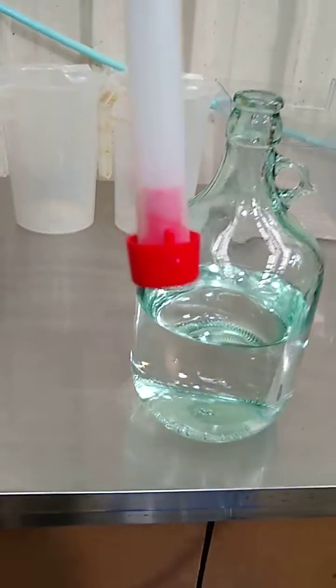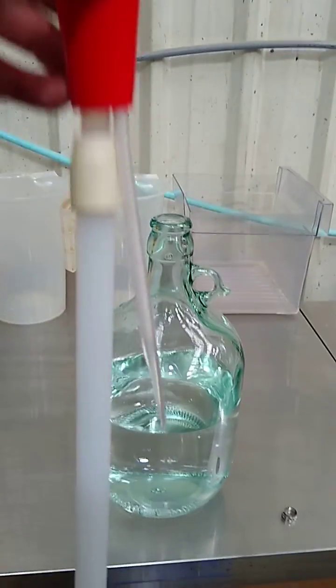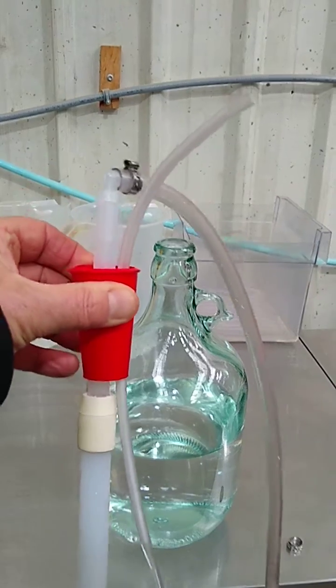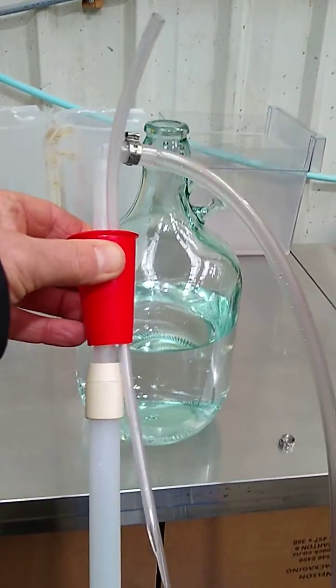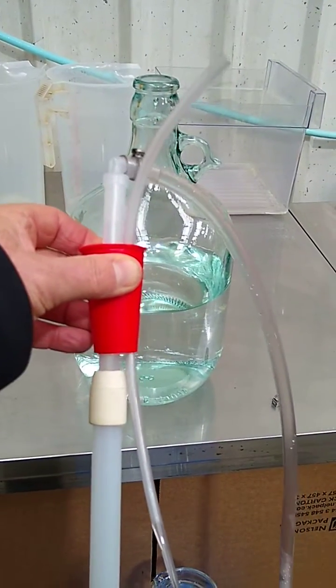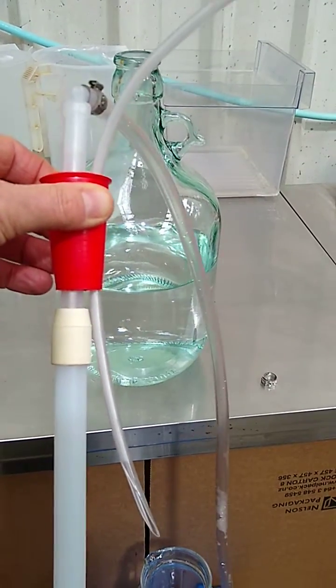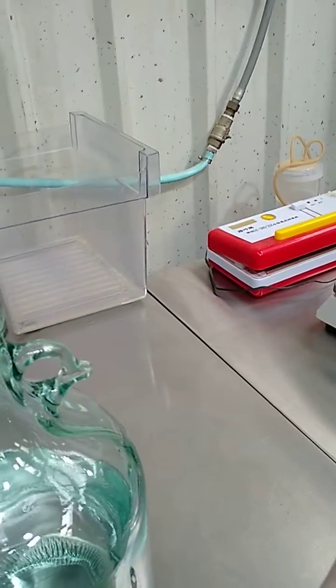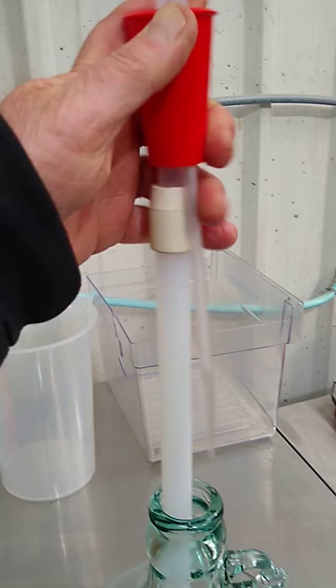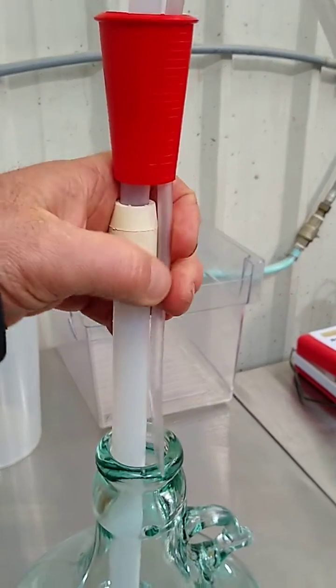It's also got a sediment reducer here on the bottom, and the beauty of this auto siphon or easy siphon is that it has a blow tube. So that tube there which is attached to the bung goes on the inside of the Demijohn.